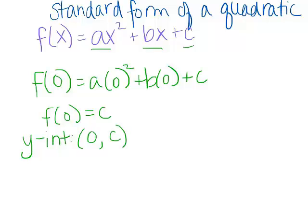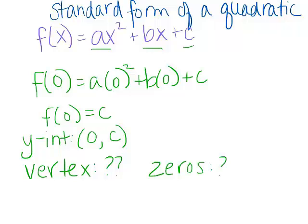If you're in standard form, what's the vertex? Or where are the zeros? These are things that we cannot readily see in standard form. So it's nice because we can easily see the y-intercept, but not much else. On the next couple of slides, we're going to investigate how we might graph in standard form — some tips that we might use.